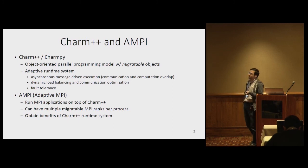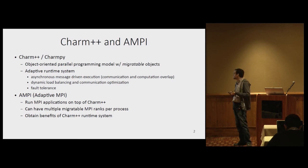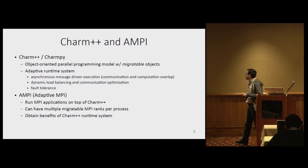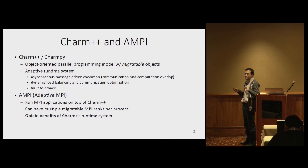AMPI allows you to have multiple MPI ranks per process, which enables things like load balancing or taking advantage of Charm++ features like the overlap of communication and computation. These are the main software technologies we work on in our group.